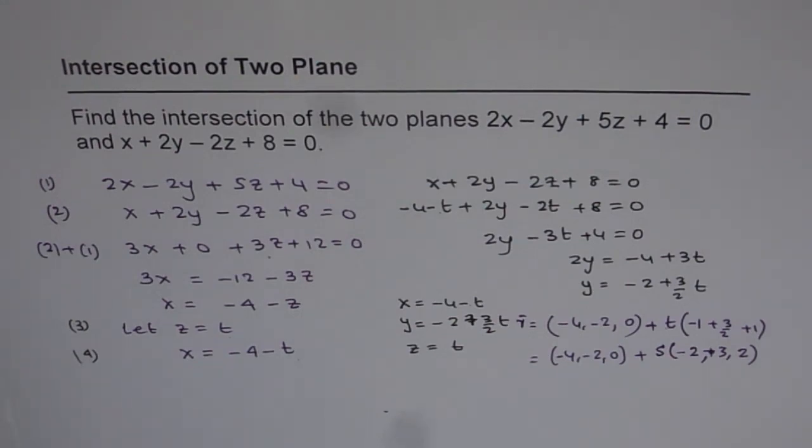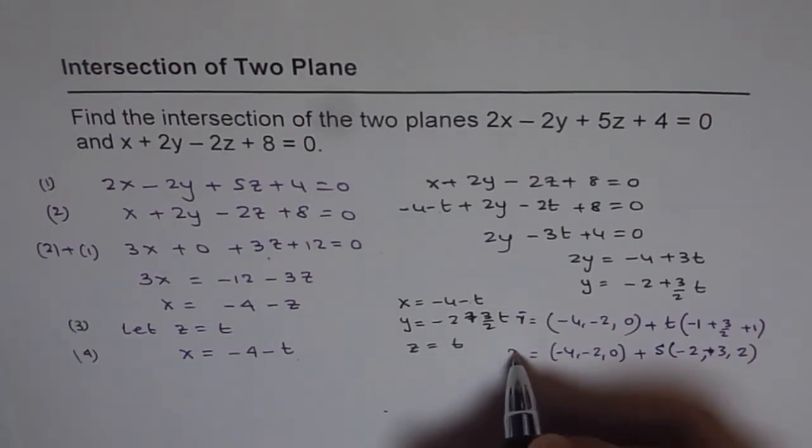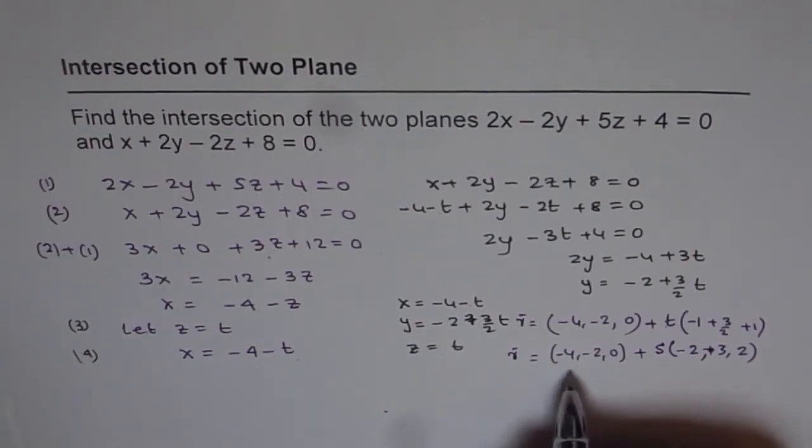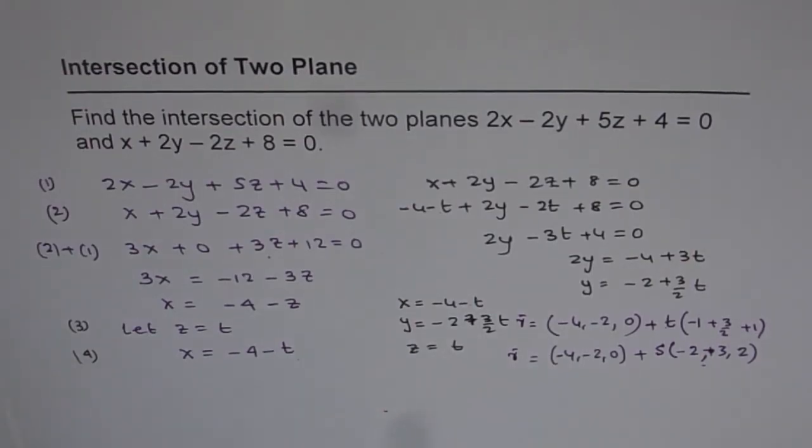Since these two planes are not parallel, they intersect in a line. The line of intersection is given by R, which is the line we found. Thank you.